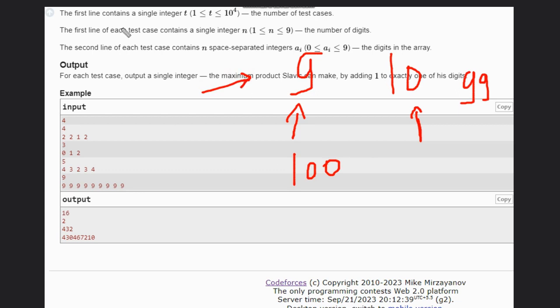For that, what you can do is just sort the vector and declare an answer variable with the first value, that is a[0], and we will increase this value. And then for i equal to 1 to n, okay, so you need to do answer times equal to a[i].